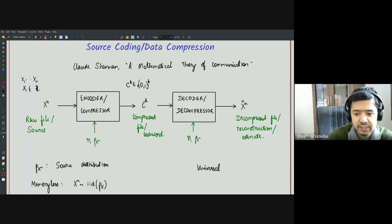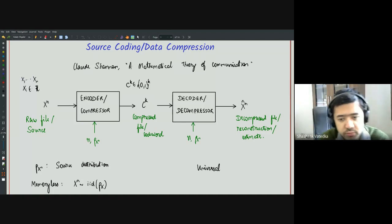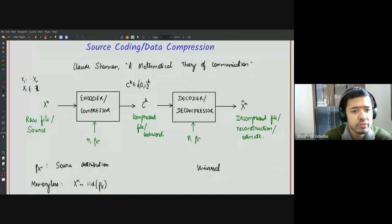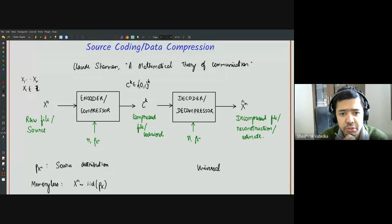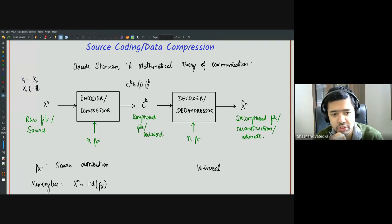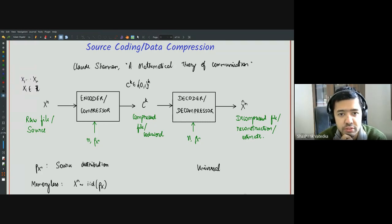Good morning, everyone. Let's get started. In the last class, we were discussing the source coding problem, also called the data compression problem. In particular, we looked at the fundamental limit of compressing any random source.